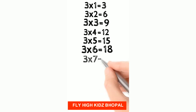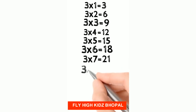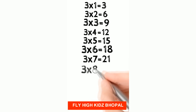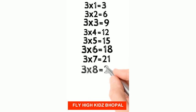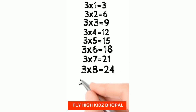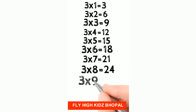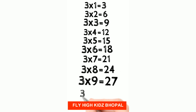3 7's are 21, 3 8's are 24, 3 9's are 27, 3 10's are 30.